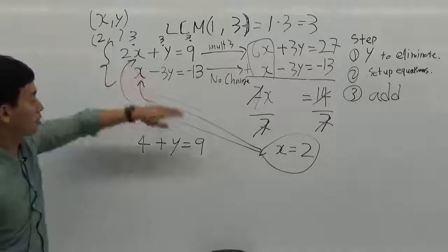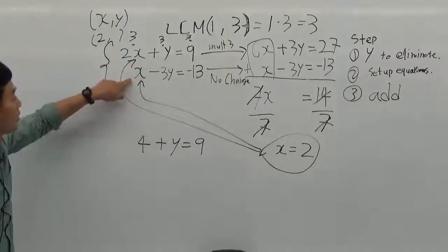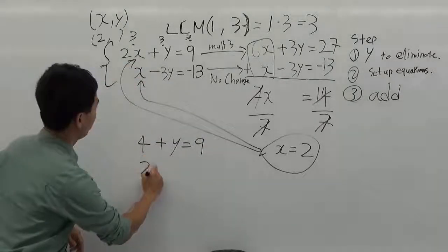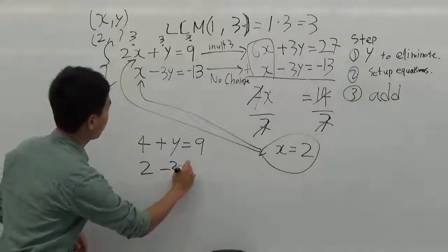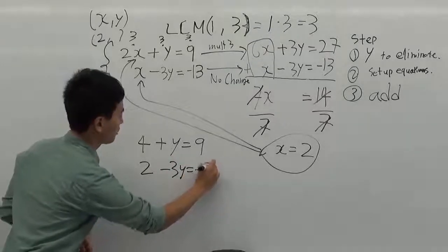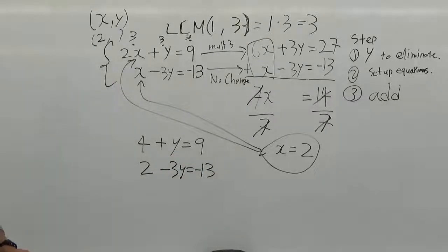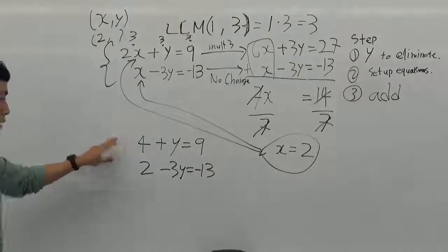And the second equation will be 2 minus 3y equals negative 13. This is the fourth step.